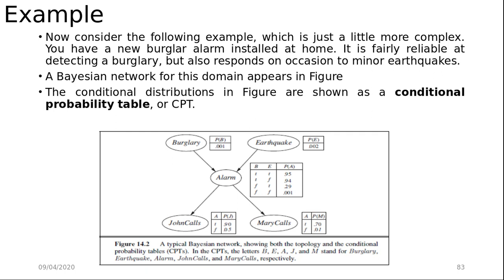Each row in a CPT contains the conditional probability of each node value for a conditioning case. A conditioning case is just a possible combination of values for the parent nodes — a miniature possible world. Each row must sum to 1 because the entries represent an exhaustive set of cases for the variable. For a Boolean variable, once you know that the probability of a true value is P, the probability of false must be 1-P, so we often omit the second number as shown in the figure. In general, a table for a Boolean variable with k Boolean parents contains 2^k independently specifiable probabilities. A node with no parents has only one row representing the prior probabilities of each possible value of the variable.